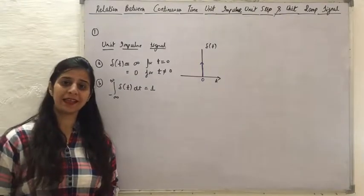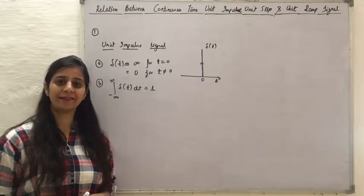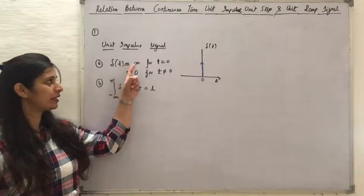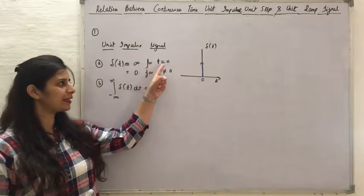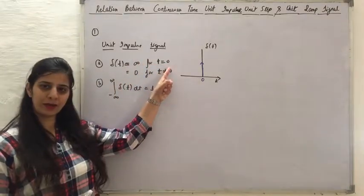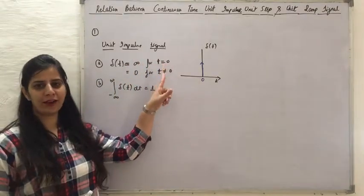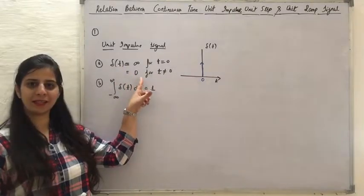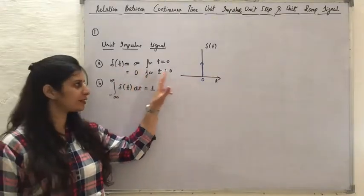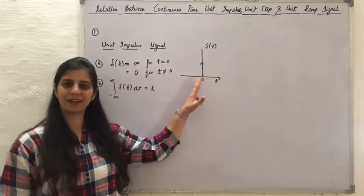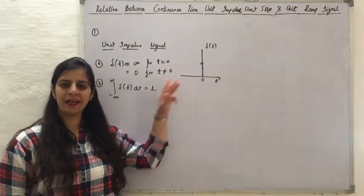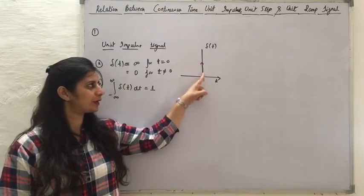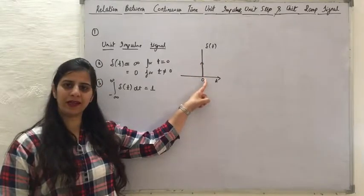A unit impulse signal is mathematically defined as its value is equal to infinite at t equal to 0, and for other values of t, the magnitude of the signal is 0. This is how the signal is given graphically — it is present only where t is 0.